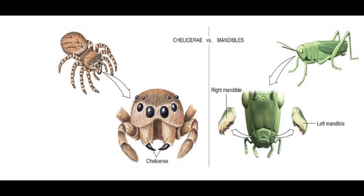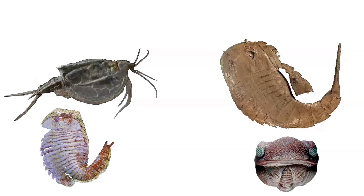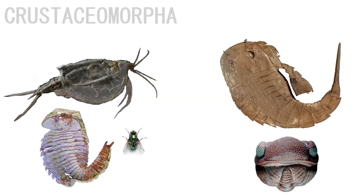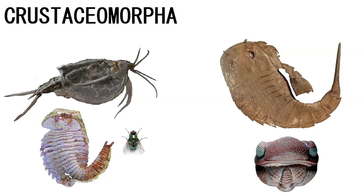These two traits — the chelicera and the mandible — are definitive when it comes to identifying a living arthropod. But when it comes to identifying species based on fossil evidence, we have to look into more than one trait to correctly assess their lineage. To group mandibulates and their relatives, we use the term crustaceomorpha, and to group chelicerates and their relatives, we use the term arachnomorpha.